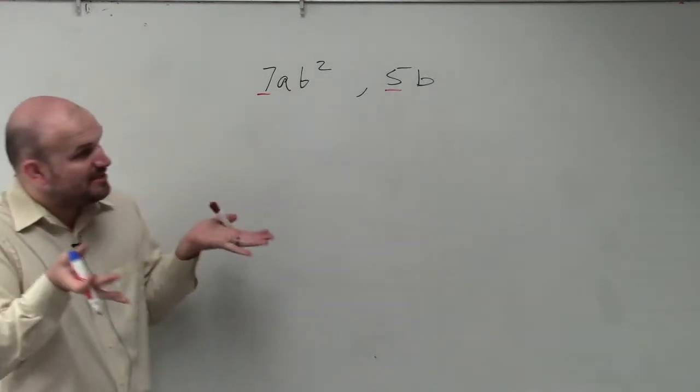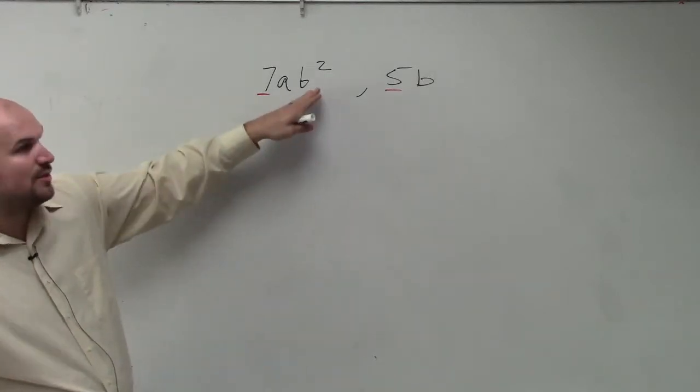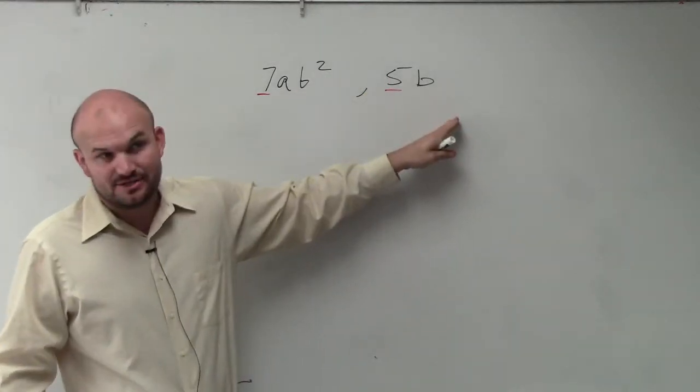So our lowest common multiple—remember, that's going to be the multiple that 7ab squared divides into as well as 5b divides into.